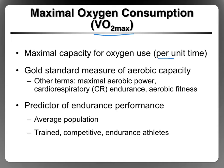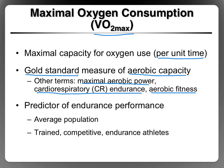VO2max is measured per unit time — it's the amount of oxygen used per minute. It is considered the gold standard, or the best way to measure aerobic capacity. Other terms used interchangeably for aerobic capacity are maximal aerobic power, cardiorespiratory endurance, cardiorespiratory fitness, and aerobic fitness. They all mean the same thing, and VO2max is the best way of measuring an individual's aerobic capacity.